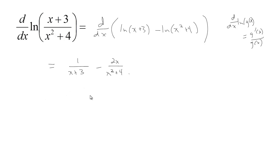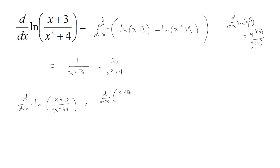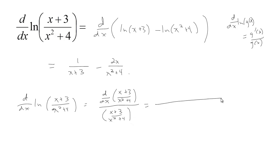You can convince yourself that was probably easier than not applying that property of logs. If we hadn't applied that, then we would have had to do this: to take the derivative of this natural log, you would take the derivative of the inside, which is going to require the quotient rule, all over the inside, which is going to be x plus 3 over x squared plus 4. Doing it this way, we're going to have a fairly nasty-looking complex fraction.